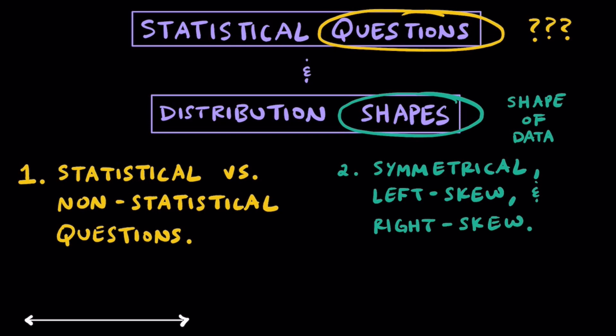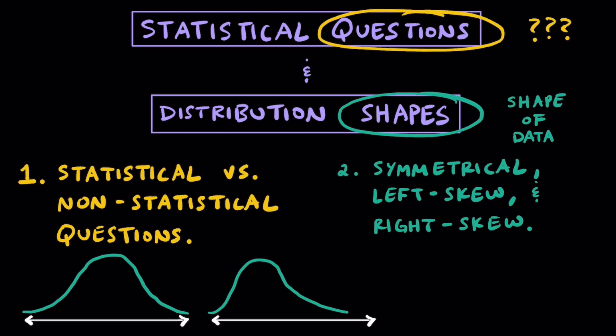Just to give you a little sneak peek of what these three shapes look like: here we have symmetrical looking data, over here we have left skewed data, and to the right we have right skewed data. Before we get into some examples and practice prompts, it would really help this channel out if you could give the video a like and leave a comment below. I encourage you to grab some paper, something to write with, and let's do some math together.